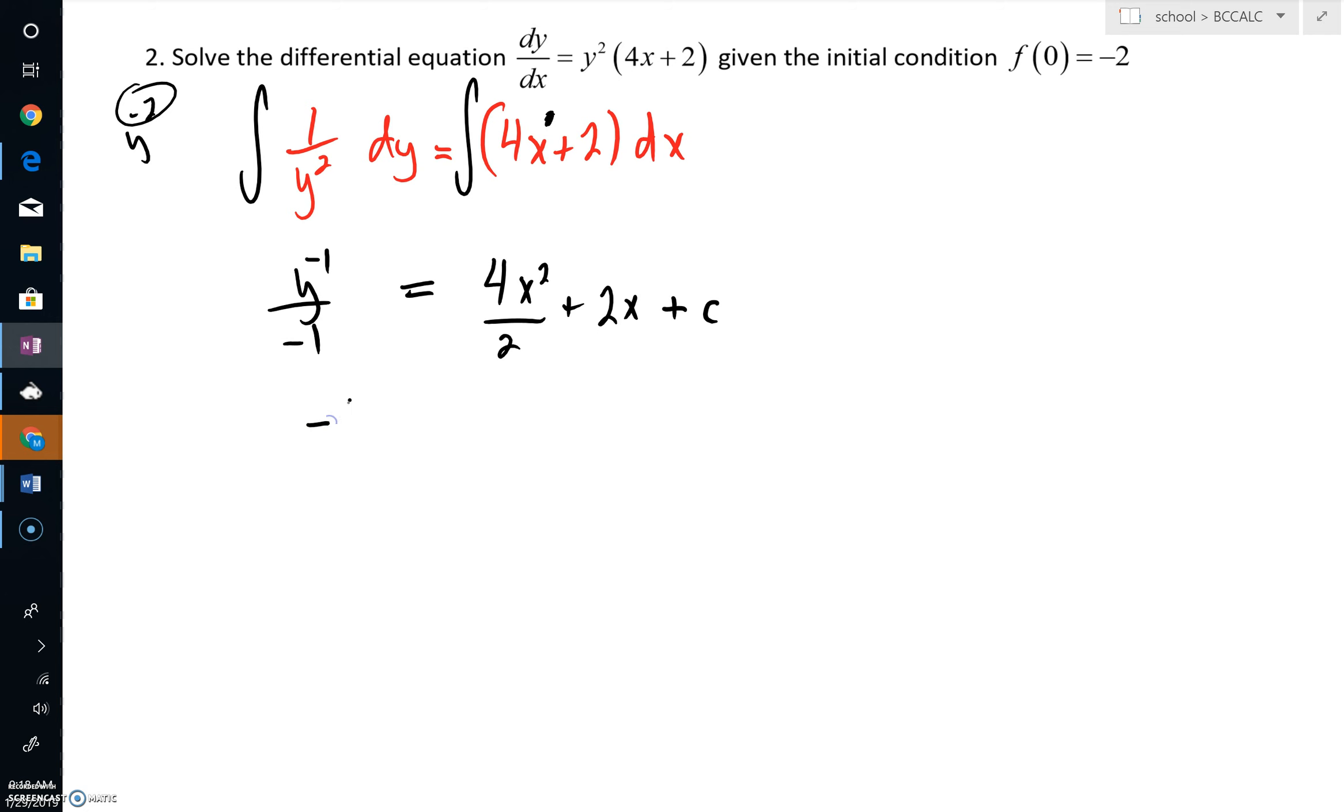So this is really negative 1 all over y is equal to 2x squared plus 2x plus c.